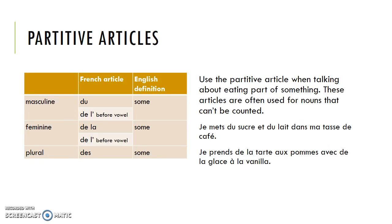The partitive articles — we use these when talking about eating or perhaps drinking part of something. These are often used for nouns that can't be counted. So je mets du sucre et du lait dans ma tasse de café, par exemple. The only way that we can count sugar is by measuring it — two spoonfuls or two sugar cubes — because you're not going to sit and count how many grains of sugar you put in your coffee. But in French, again, we have to have articles.